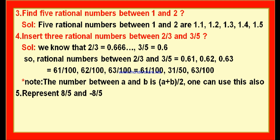Question number 5: represent 8 by 5 and minus 8 by 5 on the number line. The denominator is 5. Plus 8 by 5 and minus 8 by 5 lie at the same distance from 0 — 8 by 5 is positive and lies on the right, minus 8 by 5 is negative and lies on the left. We draw a number line — a straight line extending to infinity on either side.